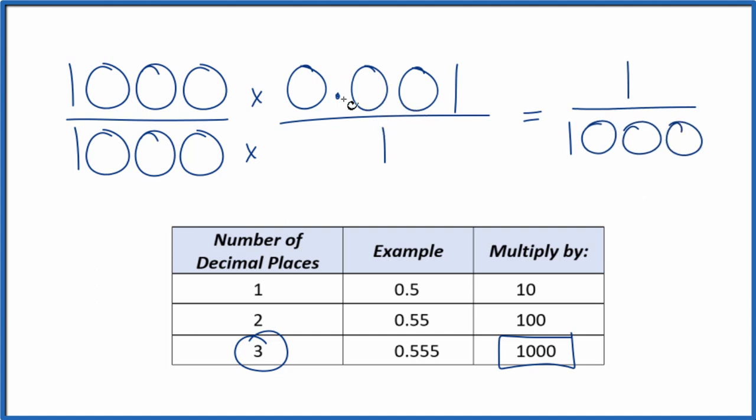So we've converted the decimal 0.001 to the fraction one over a thousand, and we can't reduce this any further. This is in lowest terms. These are equal. If you take one and divide it by a thousand, you'll get 0.001. It's just that we've converted this decimal here to a fraction.